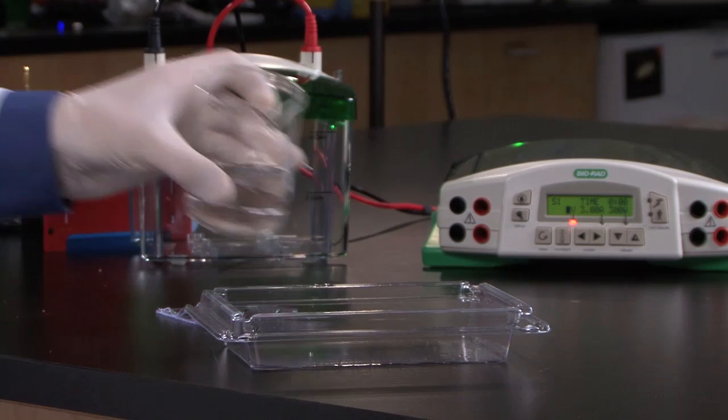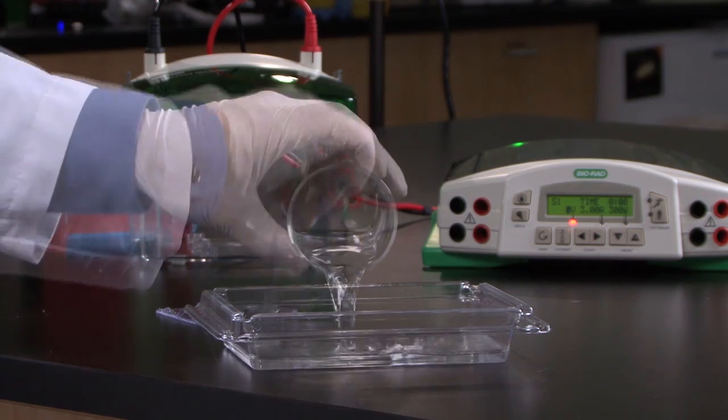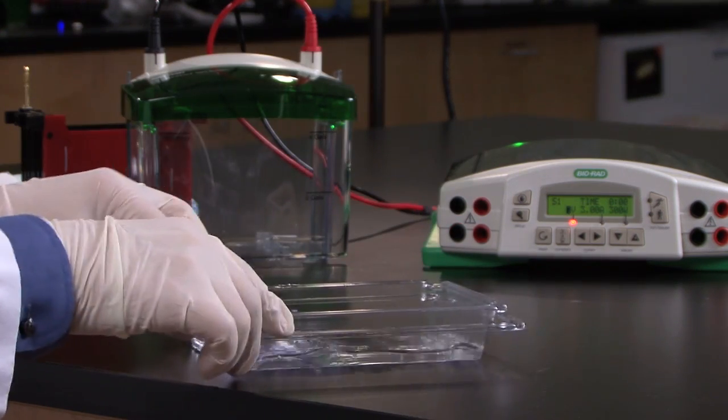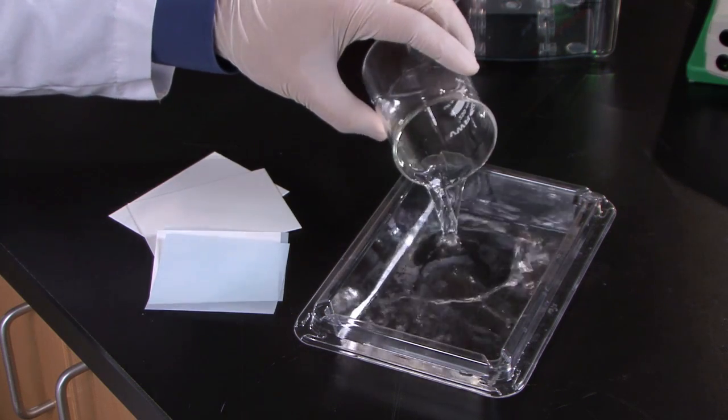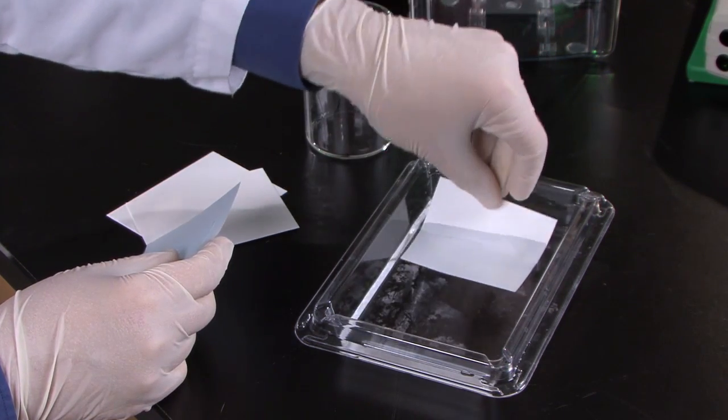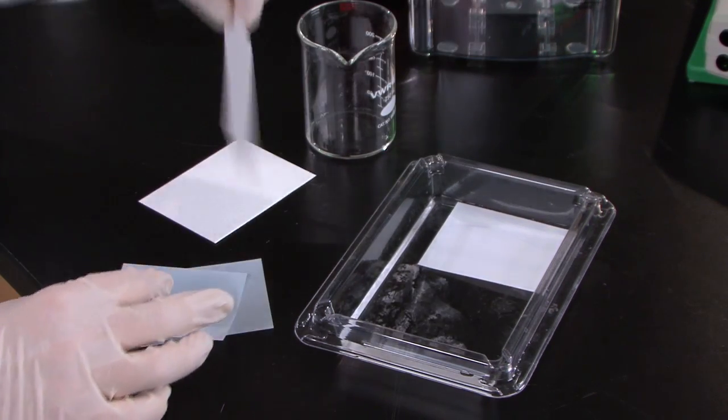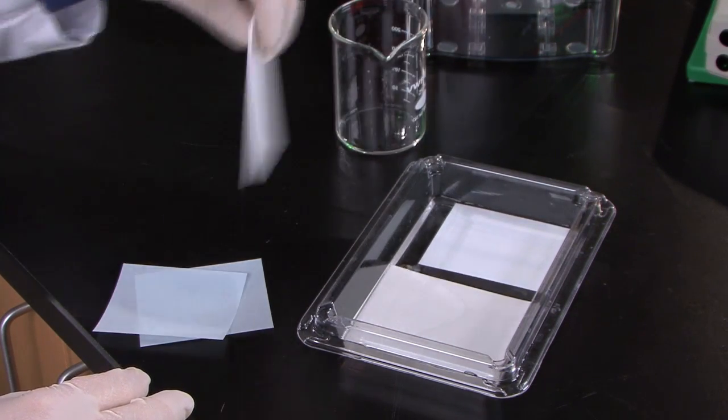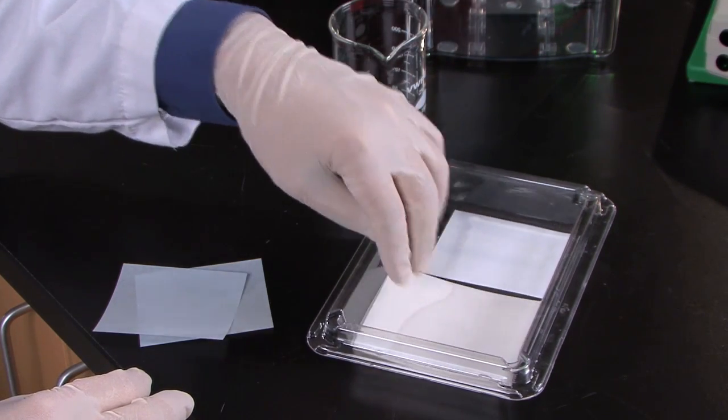The first step in preparing for a tank or semi-dry transfer is to equilibrate your gel for 10 minutes in transfer buffer. Next, you may have to cut blotting paper and transfer membrane to match the size of your gel. These must also be soaked in transfer buffer. In addition, PVDF membranes need to be wet in methanol prior to soaking in transfer buffer.